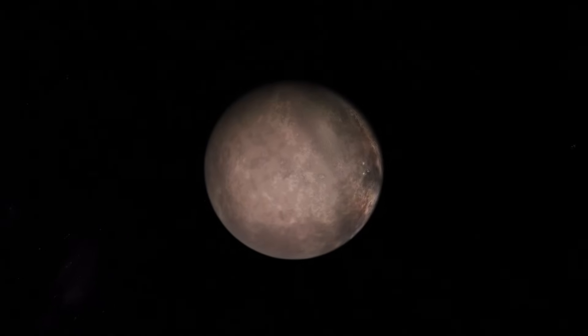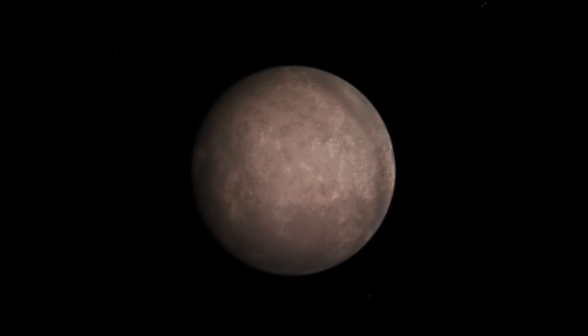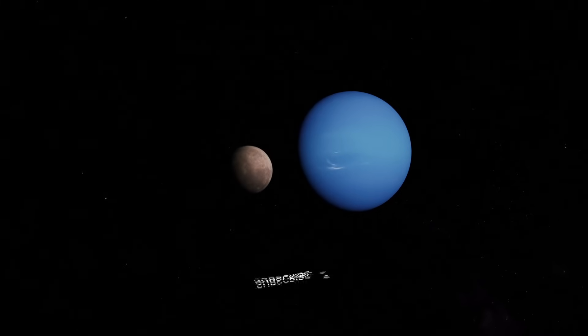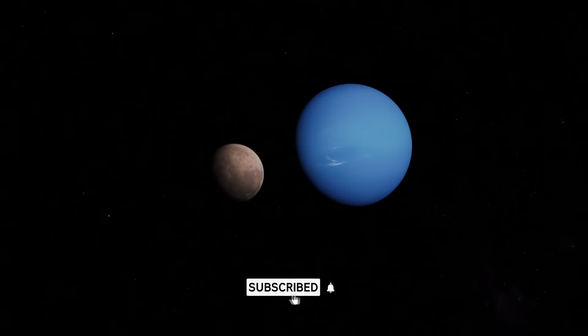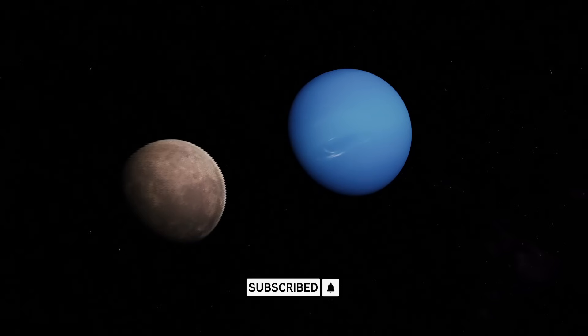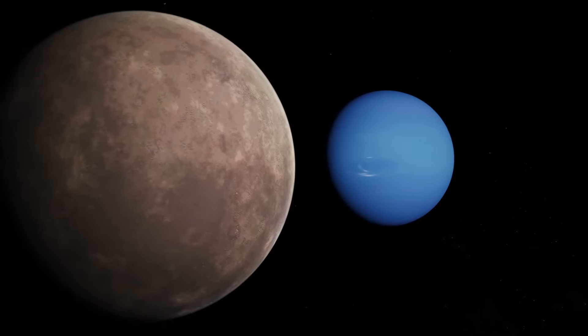But it wasn't born here. Its backward orbit is the smoking gun that proves it's a captured object from the Kuiper Belt, a lonely wanderer that strayed too close to Neptune and was ensnared by its gravity. That violent capture event likely melted its interior, kick-starting a process that remains active today.